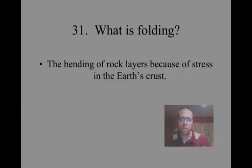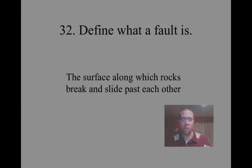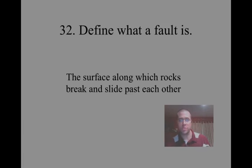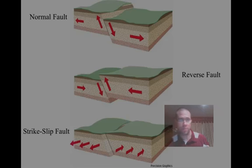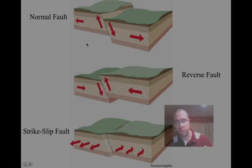Folding — what is folding? This is just the bending of rock layers because of stress in the Earth's crust. A fault is the surface along which rocks break and slide past each other. We know that faults are really at our plate boundaries, but the definition is exactly where these rocks are going to break and slide past each other. You're probably familiar with all this information from our lab on stress and faulting with the silly putty and the blocks of wood representing footwalls and hanging walls.